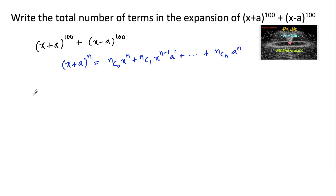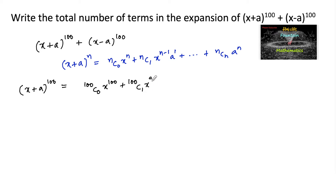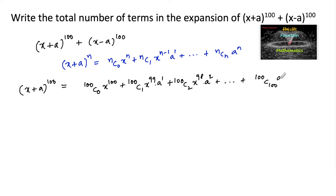So we can write (x + a)^100 = 100c0 x^100 + 100c1 x^99 · a^1 + 100c2 x^98 · a^2 + ... + 100c100 a^100.